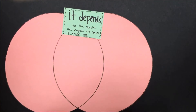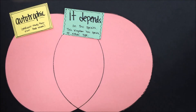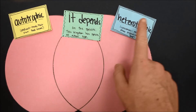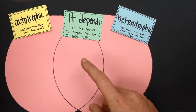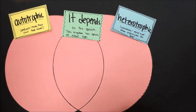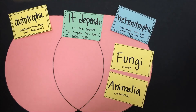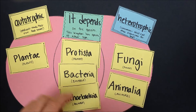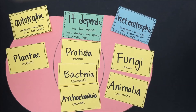Now let's compare how organisms in the different kingdoms get their energy. Some organisms are strictly autotrophs — producers that can create their own food. Some are heterotrophs, meaning they must consume other organisms for food. In some kingdoms there are both autotrophs and heterotrophs, and in rare occasions organisms that can do both. Fungi and animals are always heterotrophic. Plants can always produce their own food. In the case of protists, bacteria, and archaea, it depends on the species — some are consumers, some are producers, and some protists can do both.